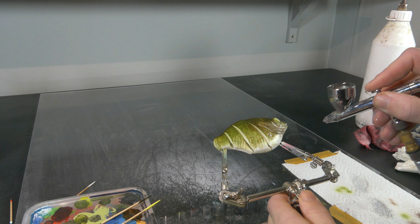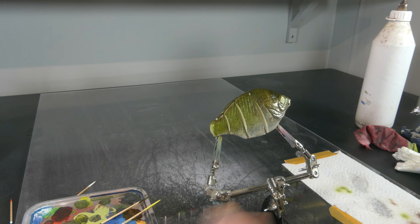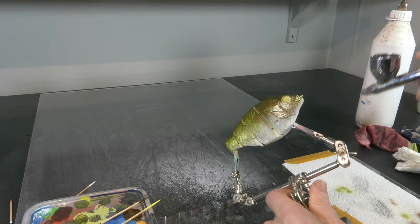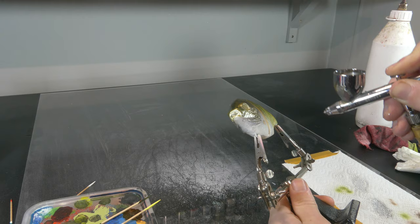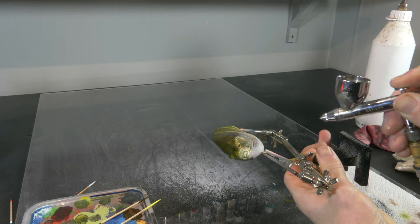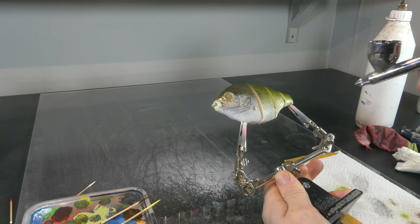Now I'm spraying some Wicked Detail White, and this is to prepare my orange because I'm going to use a fluorescent orange which is going to be very bright on this bait. A little bit too bright maybe for a natural red-bellied piranha, but I think it's going to be a really nice feature to use a fluorescent orange on this lure. But to make this orange really bright and pop, we need a white base. That is why I'm using a transparent white to create this fading white that is fading out towards the upper side of the body.